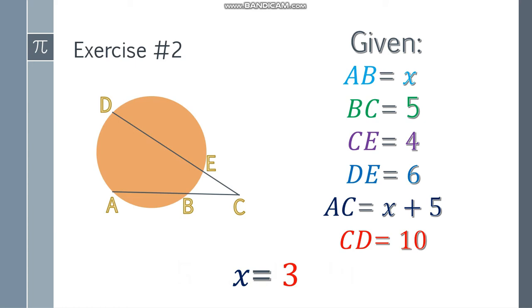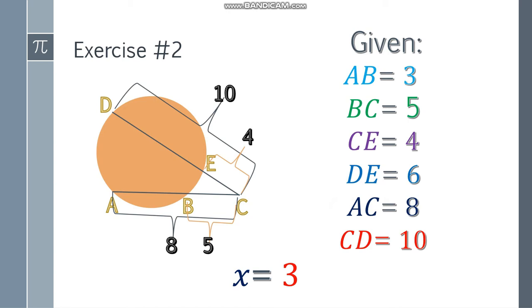Since we know the value of x, we can substitute it. AB is 3, BC is 5, and AC is 3 plus 5 equals 8. We've found the value of x and determined the measure of each segment - the internal and external segments and the whole secant.